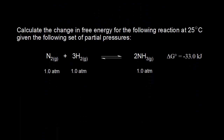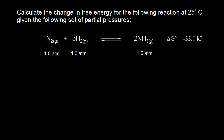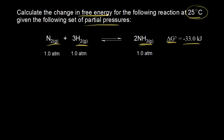Here we're trying to synthesize ammonia. Our goal is to calculate the change in free energy — delta G — for the following reaction at 25 degrees C, given a set of partial pressures. Nitrogen gas plus hydrogen gas gives us ammonia gas. At 25 degrees C, the standard change in free energy, delta G zero, is equal to negative 33.0 kilojoules. For gases, it's easier to measure pressures than concentrations. At this instant in time, the partial pressures for all gases are one atmosphere — one atmosphere each for nitrogen, hydrogen, and ammonia.